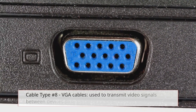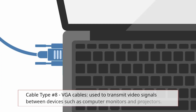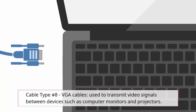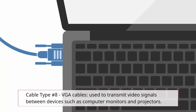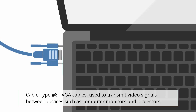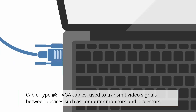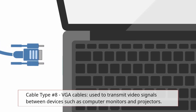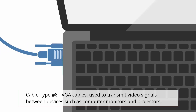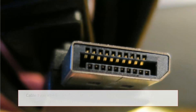Cable type number eight, VGA cables. Video Graphics Array, or VGA cables, are used to transmit video signals between devices such as computer monitors and projectors. These cables are typically used for analog video signals, and are becoming less common as digital video signals become more prevalent.